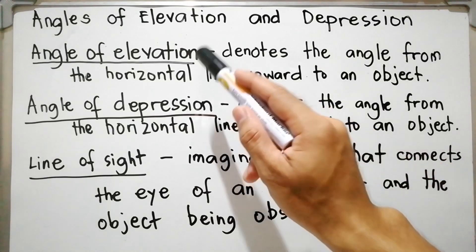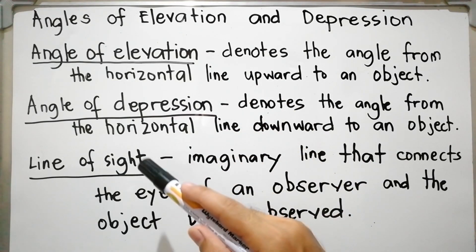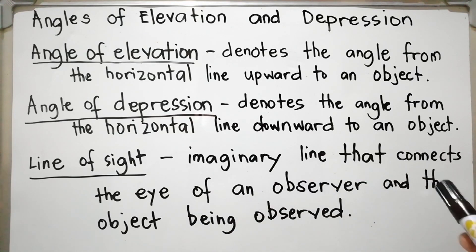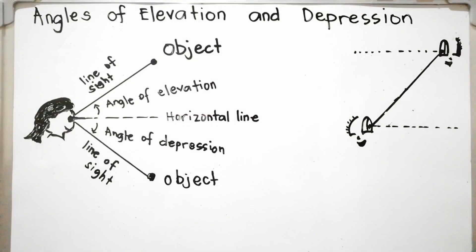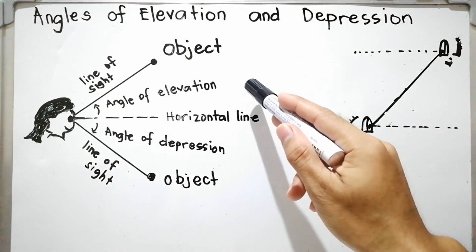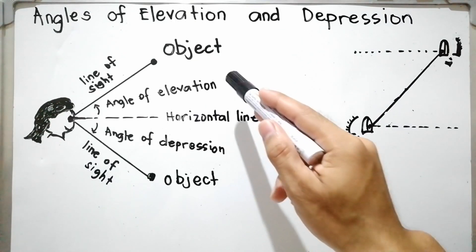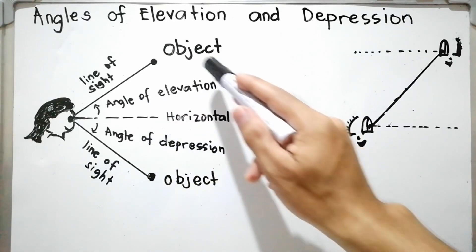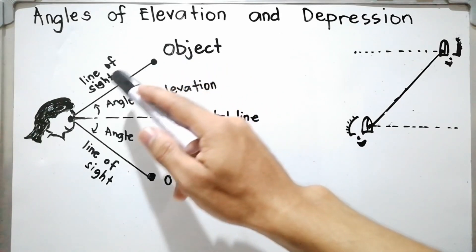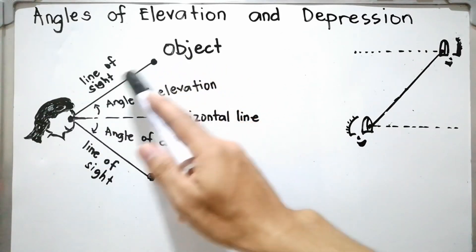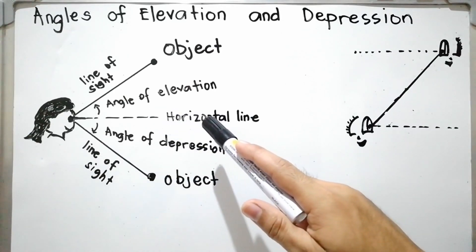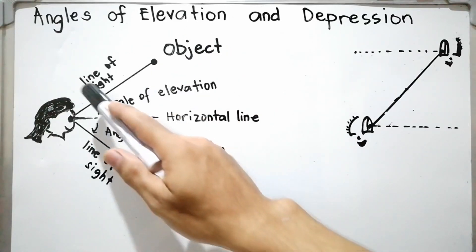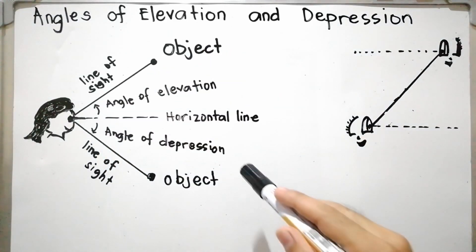The line involved in angle of elevation and angle of depression is the line of sight — the imaginary line that connects the eye of an observer and the object being observed. For the angle of elevation, the line of sight connecting the eyes of the observer and the object is above the horizontal line, so the angle is formed between the horizontal line and the line of sight.